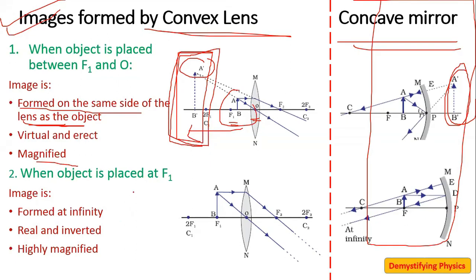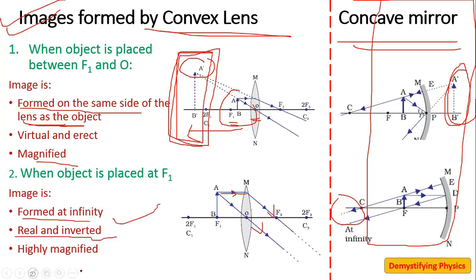Please pause the video and draw the ray diagram side by side — you need to practice this, as it is very important. Next case: when the object is placed at the focus F1. One ray is parallel and passes through the focus; the second ray passes through the optical center. The image is formed at infinity — real, inverted, and highly magnified.